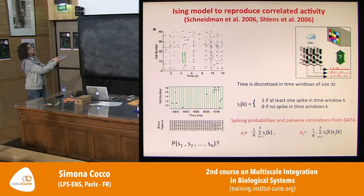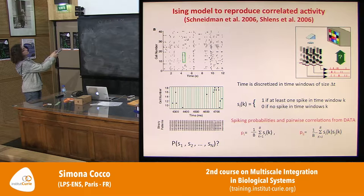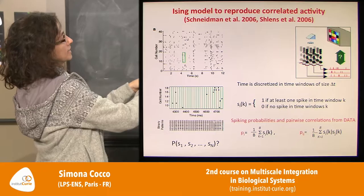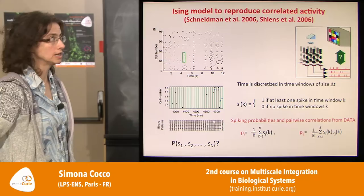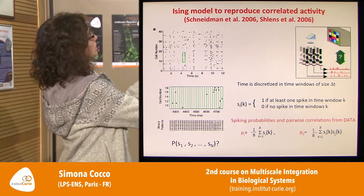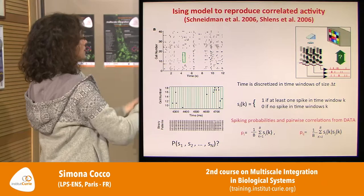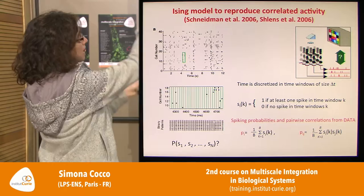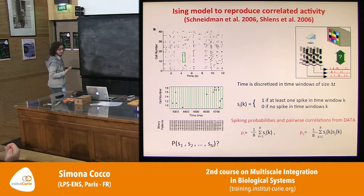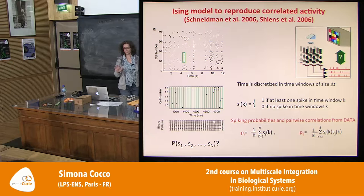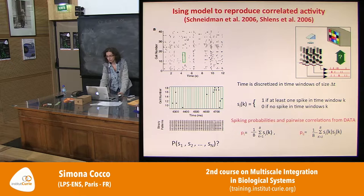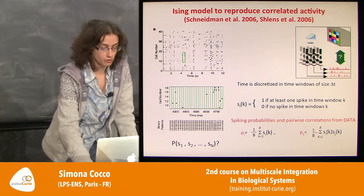These are the empirical first and second moments extracted from data. As a first step, forgetting about second moments, you just impose the average spiking frequency for each neuron — and in this case neurons are independent, so you can write the probability distribution as a product over N neurons of each neuron's individual spiking probability P_i. You can rewrite this in statistical physics form as the exponential of an energy with local fields H_i, plus a partition function Z ensuring normalization.